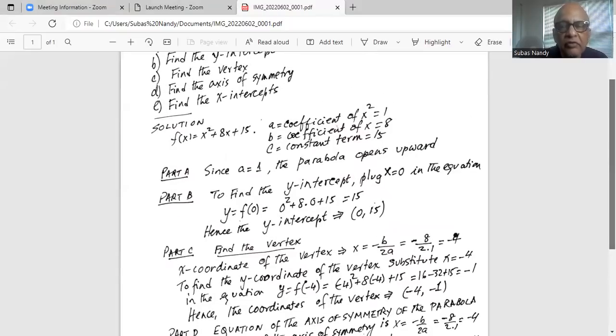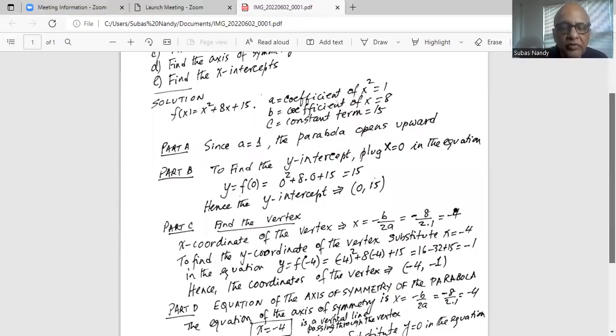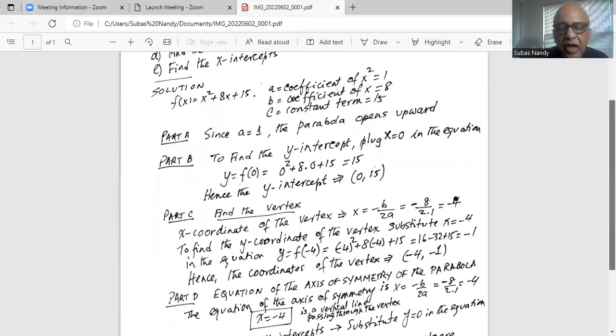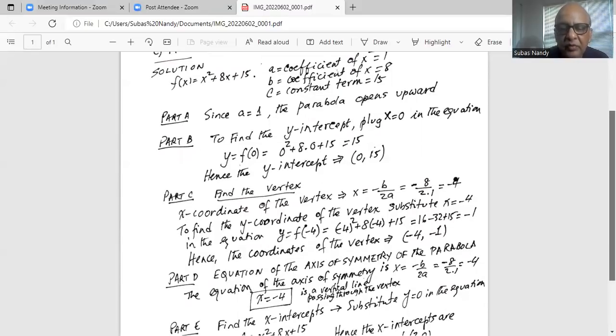Now for part D, we have to find the axis of symmetry. The equation of the axis of symmetry is x equal to minus B over 2A, which is minus 8 divided by 2 times 1, which is 2. Minus 8 divided by 2 is minus 4. Hence the axis of symmetry is x equal to minus 4. It is a vertical line passing through the vertex which divides the parabola into two equal parts. That is why it is called axis of symmetry.